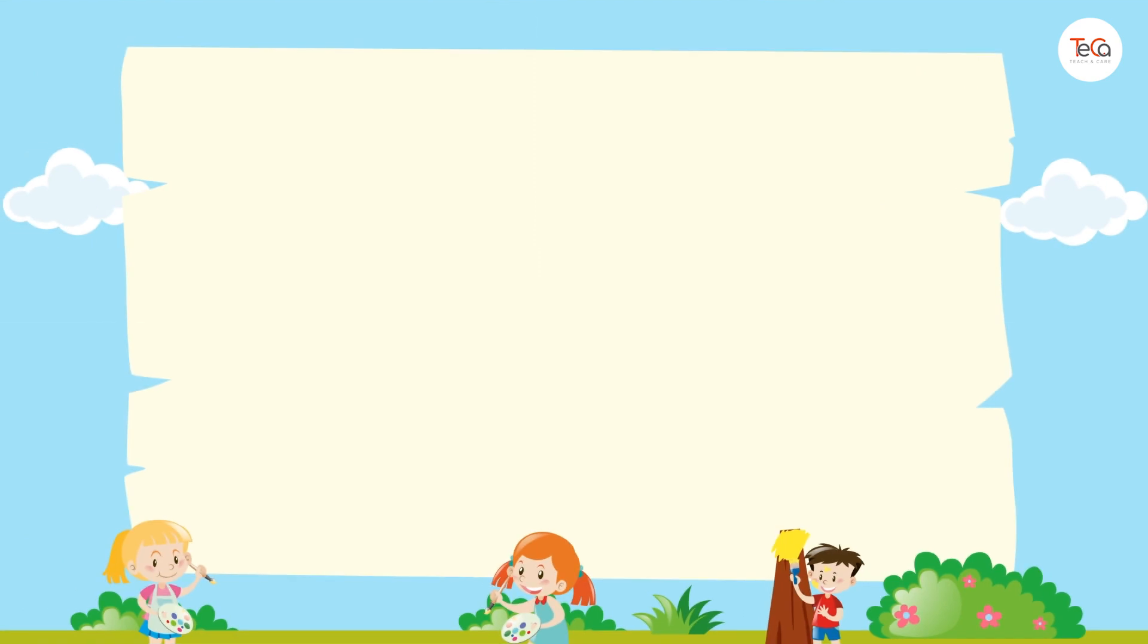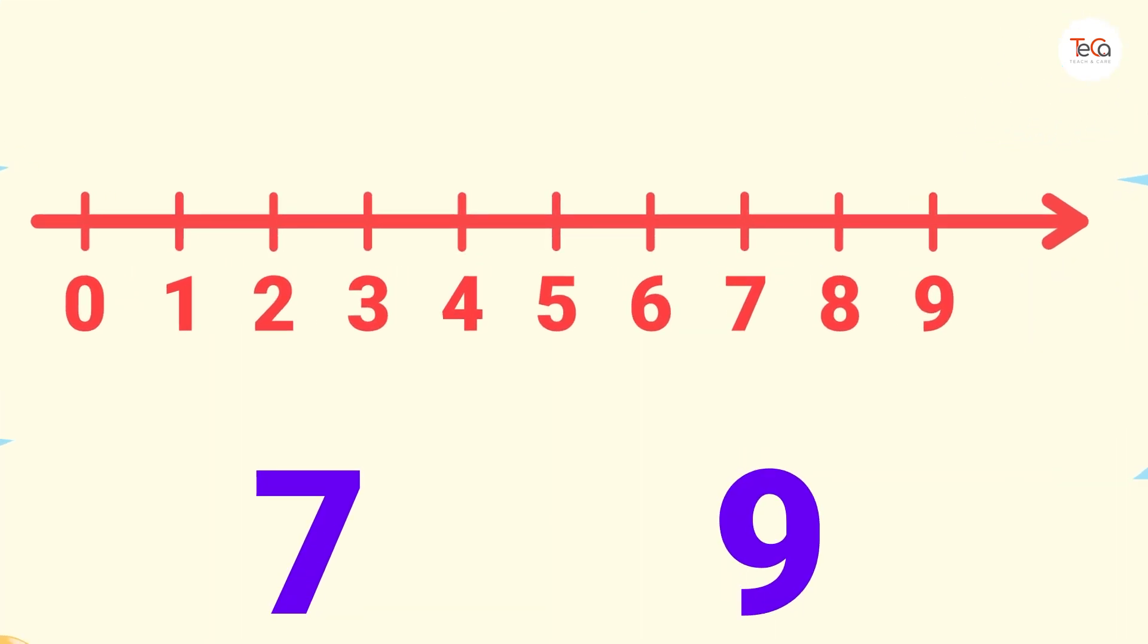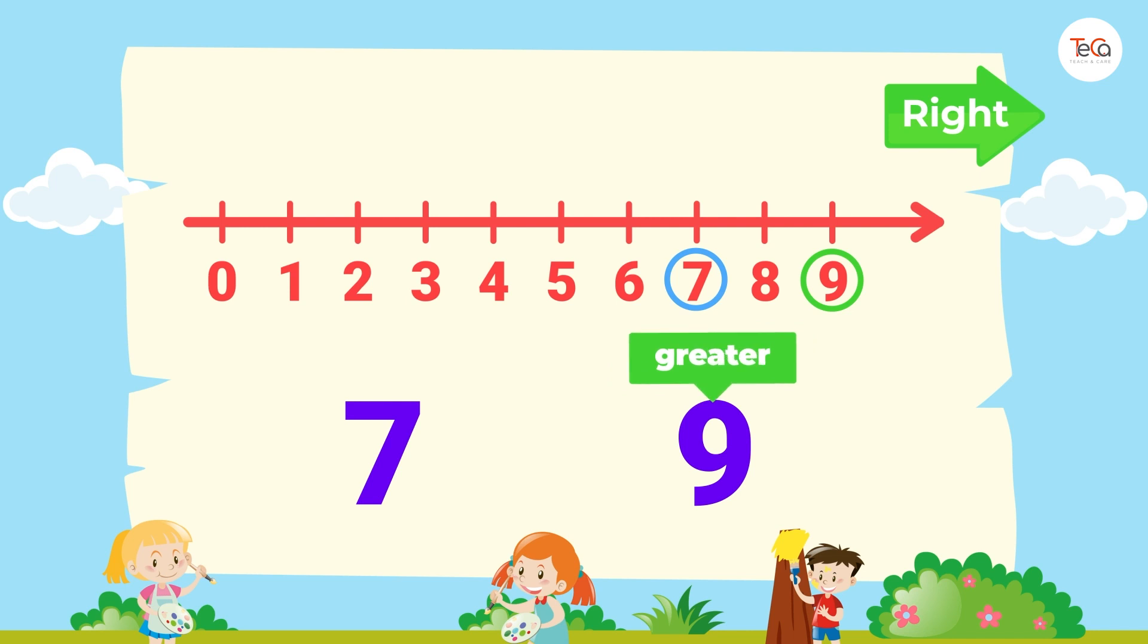Now, use the number line to tell me which number is greater. 7 or 9? Have you found your answer yet? We already know that to find the number that is greater, just decide which number is to the right of the other number on the number line. Here, number 9 is to the right of number 7. So, 9 is greater than 7.